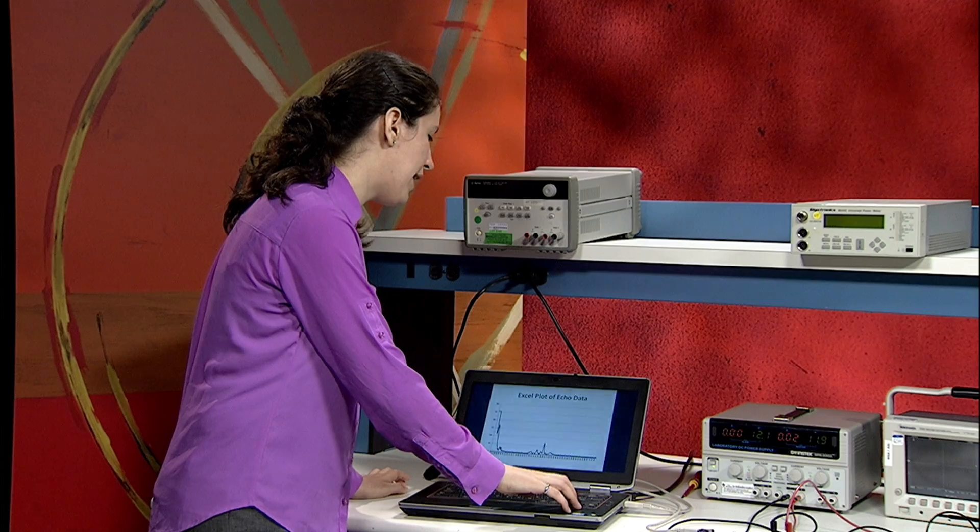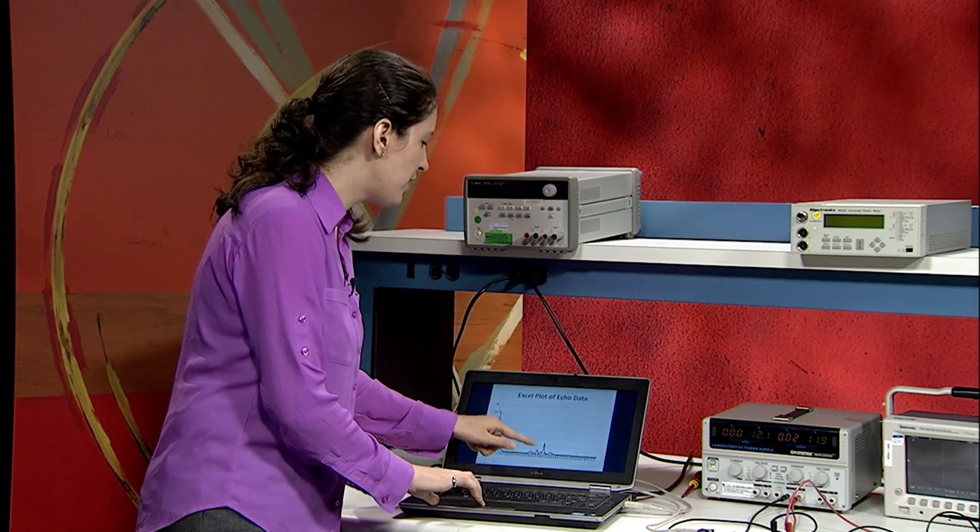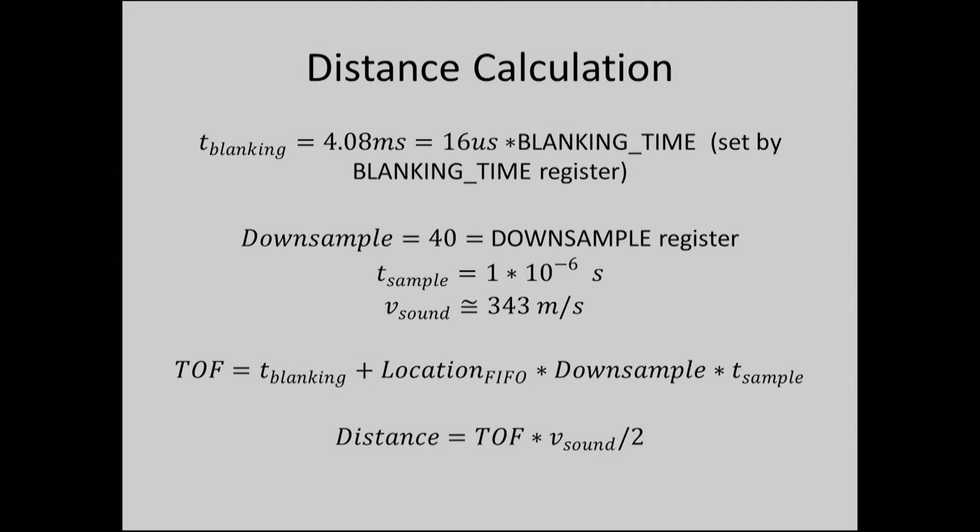So if we use our math to figure out what this peak corresponds to, using this equation that I'm showing here, we can calculate the time of flight, as I explained before, and then the distance, of course, is the time of flight times the speed of sound, and it's divided by two because the signal has to travel to the object and then back to the PG-450.